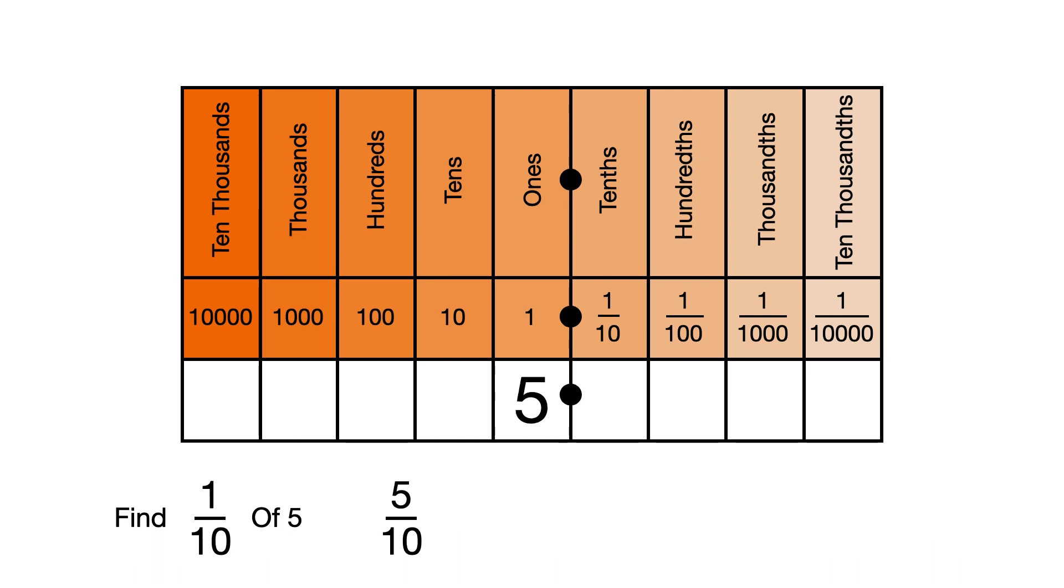Finding a tenth of 5 is the same as saying 5 divided by 10. To divide by 10, we move the digits one place to the right. So to divide 5 by 10, we move it one place to the right. We fill the 1s column with a 0, just so it's easier to see what number we have. And find that 5 divided by 10 is 0.5.